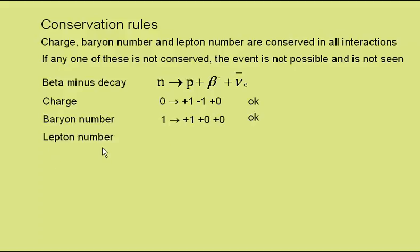Lepton number: the neutron has zero lepton number, as does the proton. The beta-minus has a lepton number of plus one — it is a lepton. The electron anti-neutrino has a lepton number of minus one — it is an anti-lepton. And nought is equal to nought plus one minus one. So that is OK. Beta-minus decay occurs.